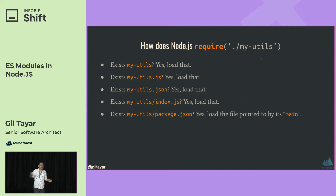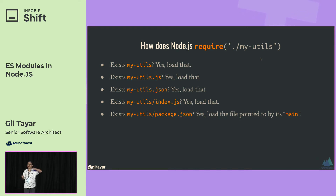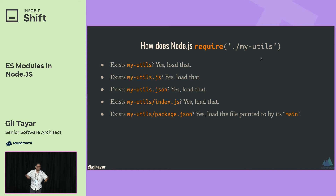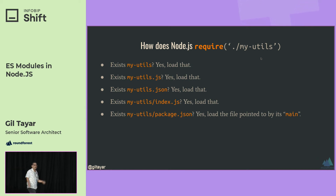How does Node.js require a file? Let's say 'dot-slash my-utils'. It goes through a pipeline: first it searches for 'my-utils' with no extension — usually doesn't find it. Then 'my-utils.js' — if found, done. Then 'my-utils.json' — if found, done. Then a folder with index.js inside. Then a folder with a package.json and its main field. If none of those — error. That is how require works in Node.js.